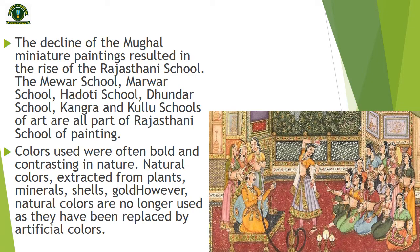The decline of Mughal miniature paintings resulted in the rise of the Rajasthani school. The Rajasthani school of painting can be further divided into various schools depending on the region: the Mewar school, Hadoti school, Dhundar school, Kangra and Kulu schools. Like the Mughal emperors, the Rajput rulers were also lovers of art. Colors used were often bold and contrasting — natural colors extracted from plants, minerals, shells, gold, silver, and precious stones were used. Preparation of colors itself would often take weeks, and only fine brushes were used.